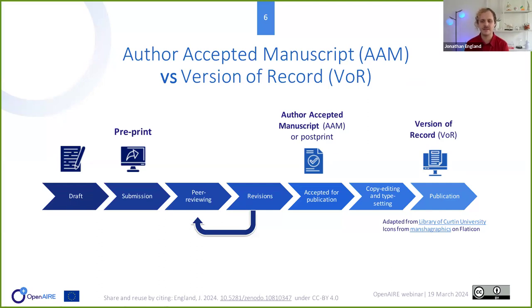A few definitions: when you first send a draft to a publisher, it's called a preprint. After the peer reviewing process, the accepted version is called the author accepted manuscript, previously known as postprint. This is usually the version where you retain your rights. After the publisher does copy editing, you get the version of record — the pretty, formatted version. Either the author accepted manuscript or the version of record deposited in open access satisfies the mandate.